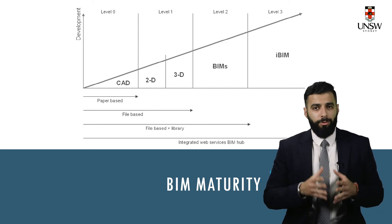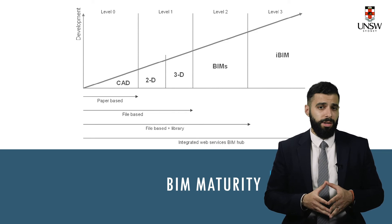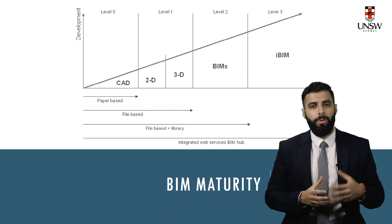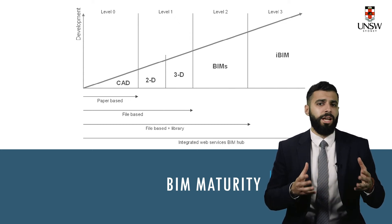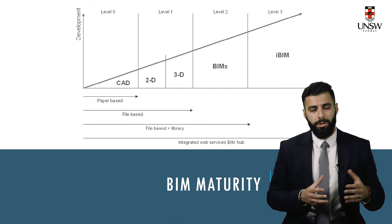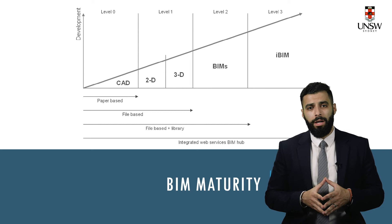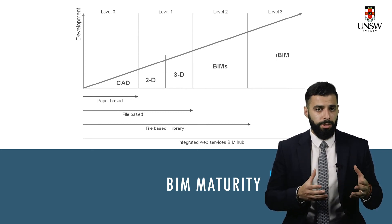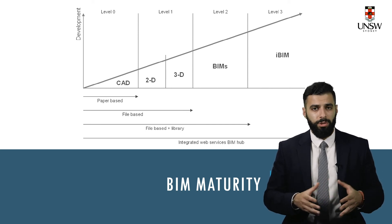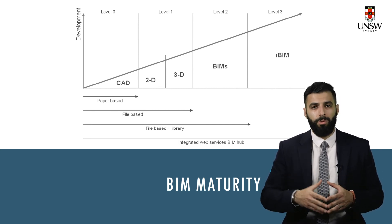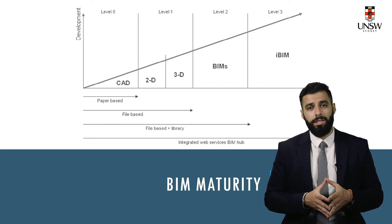In level two of the BIM maturity scale, the organization develops a BIM library containing common BIM objects used across various projects. For example, if you have a family of windows or doors commonly installed in commercial buildings, you can develop a library of these and reuse them every single time you have a similar project.